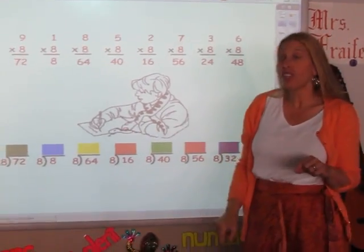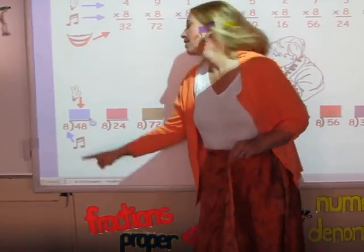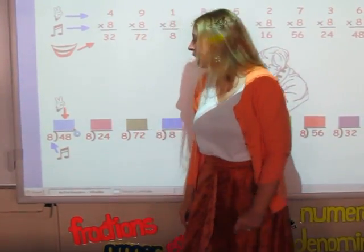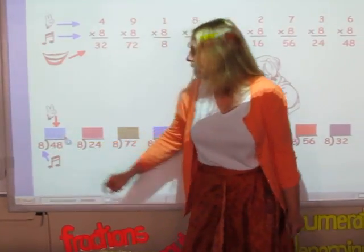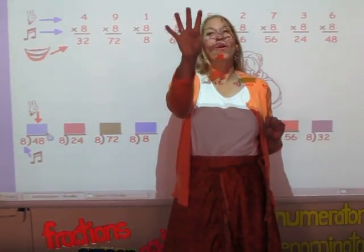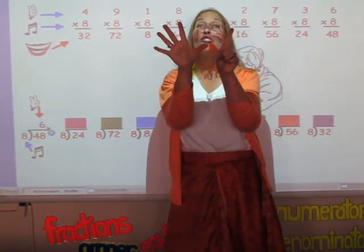Now on this row, the division fact row, you sing the song of the divisor until you get to the dividend. And the answer is the number of fingers it took you to get there. I'm singing the eight song until I get to 48. 8, 16, 24, 32, 40, 48. And my answer is six.